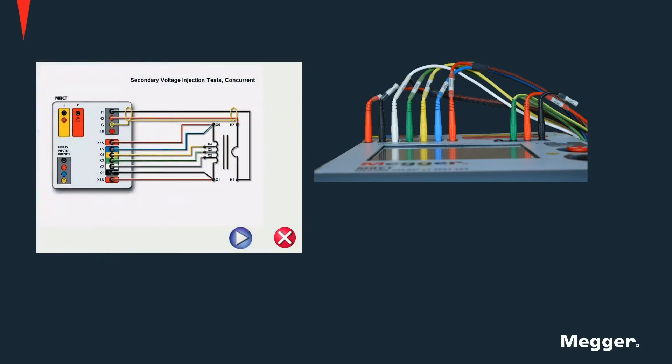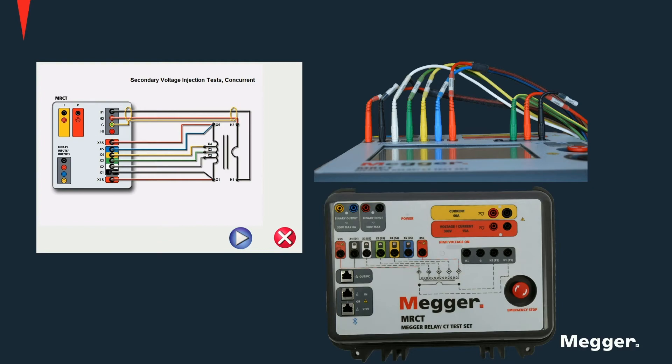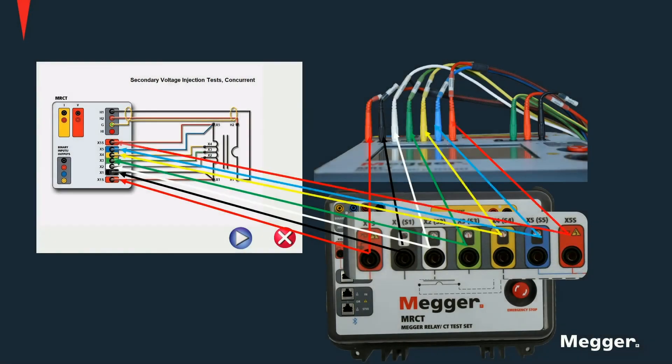When it comes to testing with the MRCT, it is important to remember that most tests can be performed with a single connection diagram. For example, for the five-tap CT depicted here, we can perform at the same time or without changing connections tests like winding resistance, ratio, insulation resistance, and saturation curve, and we can even perform a demagnetization procedure without ever having to change the connections on the MRCT. You should remember to always connect X1S together with X1S1 and X5S with X5S5. These leads should always be connected to the main tabs of the CT under test.